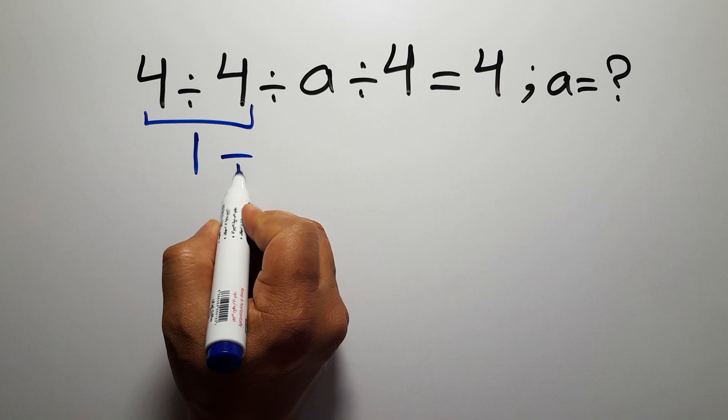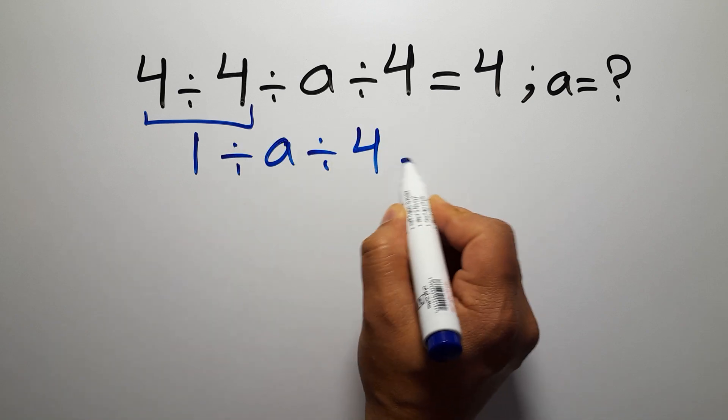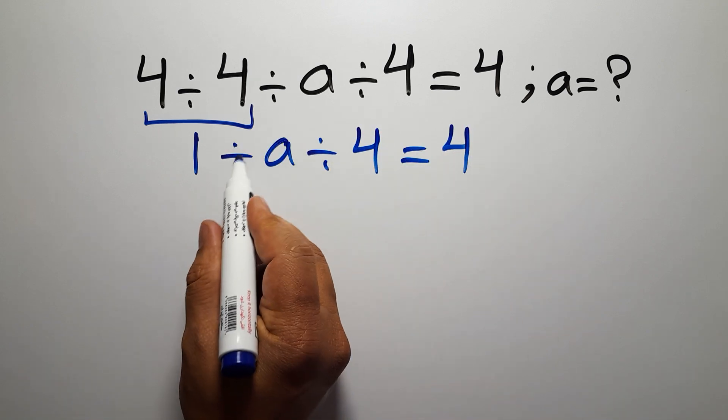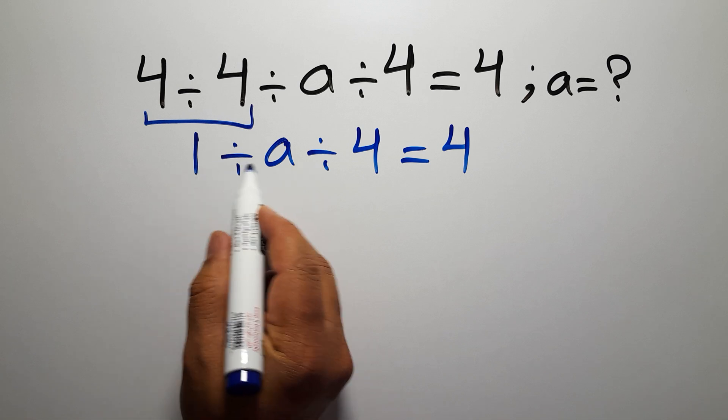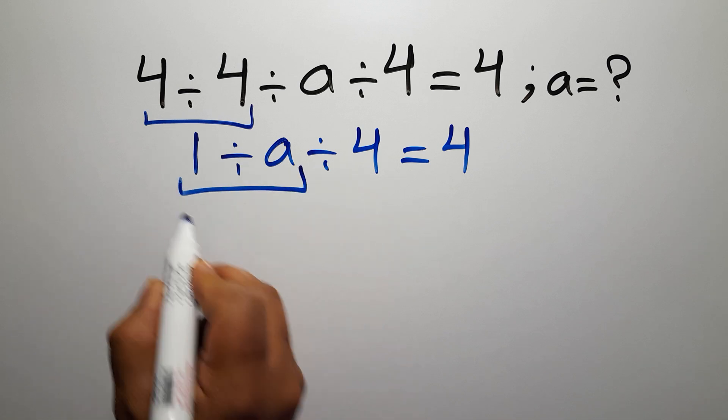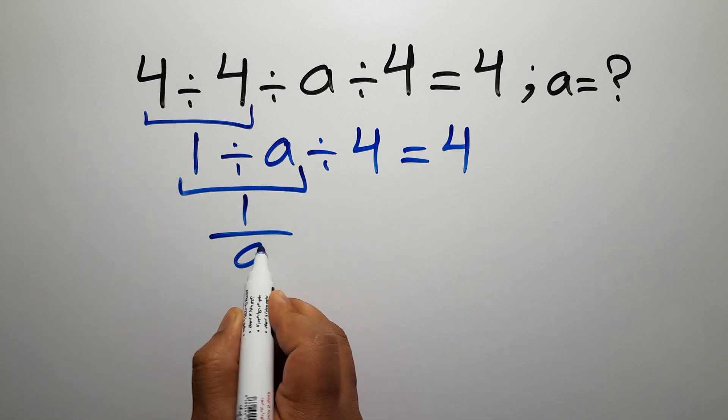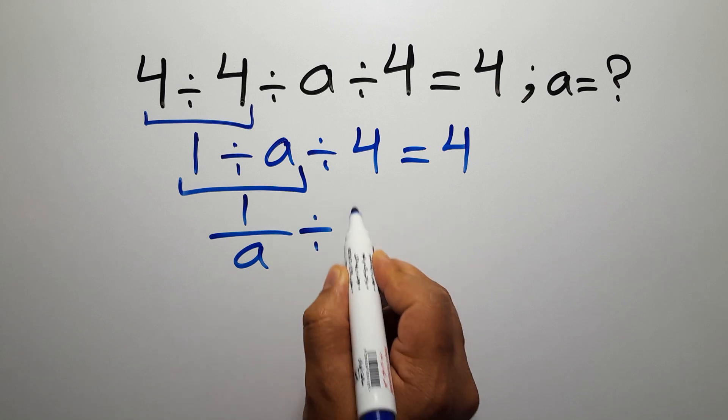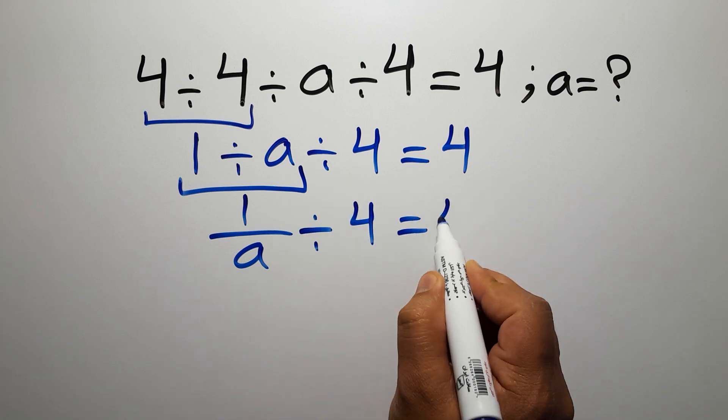So 1 divided by a divided by 4 equals 4. Now we have to do this division. 1 divided by a can be written as 1 over a, divided by 4 equals 4.